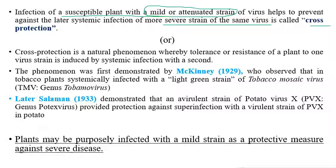Another definition: it is a natural phenomenon whereby tolerance or resistance of a plant to one virus strain is induced by the systemic infection of a second strain. If we infect the plant with mild or attenuated strains, resistance is developed and the plant can protect itself against severe strains of plant viruses. It is simply like immunizing the plants.